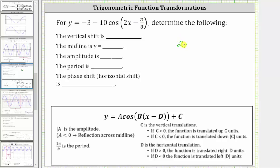If we have two x minus pi over eight and we need to factor two from the expression, we need to have a two in the numerator of pi over eight. Therefore, we will multiply the numerator and denominator of pi over eight by two. Now we can factor two from the expression, giving us two times the quantity x minus pi over 16.